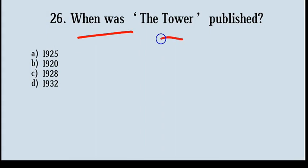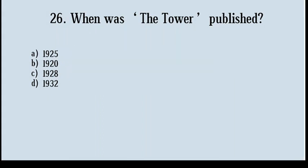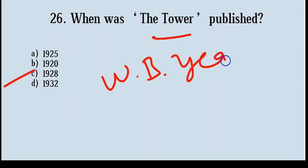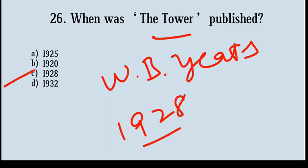When was 'The Tower' published? Options: 1925, 1920, 1928, 1932. Correct answer: option number C, 1928. 'The Tower' is a book of poems written by W.B. Yeats and published in 1928. It is his first major collection after receiving the Nobel Prize in 1923.